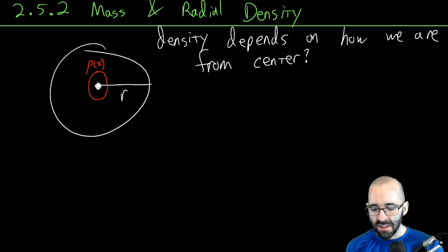If we're at this point, all of this will have the same density. X is just how far we are, or maybe we're a little farther away, that'll have a different density.